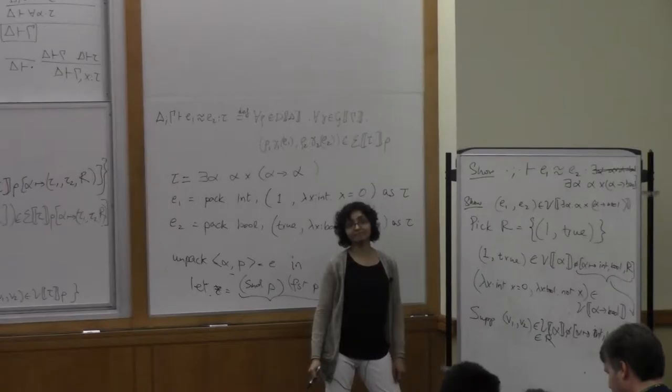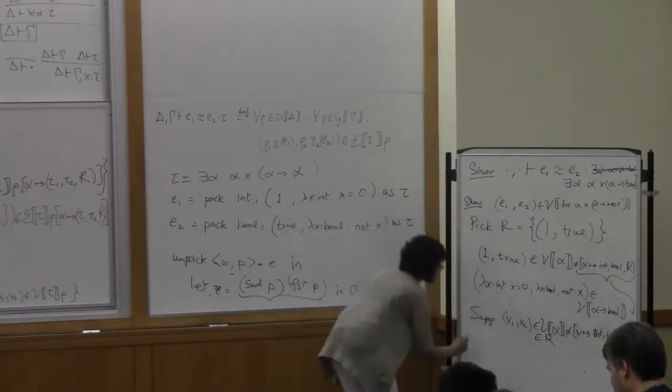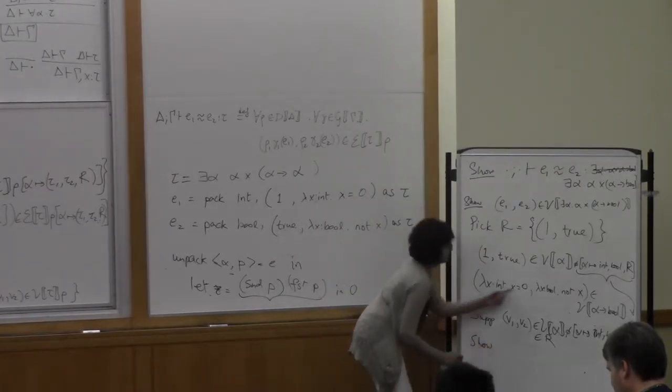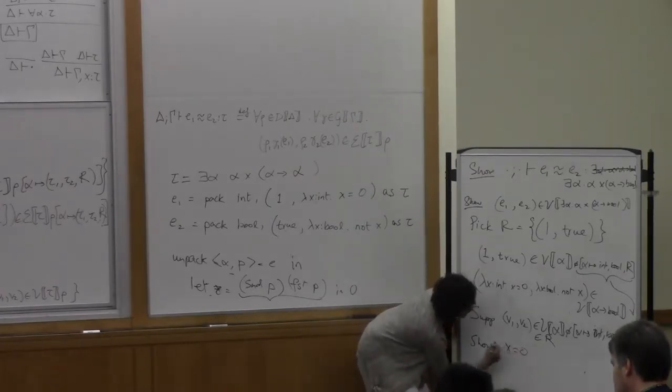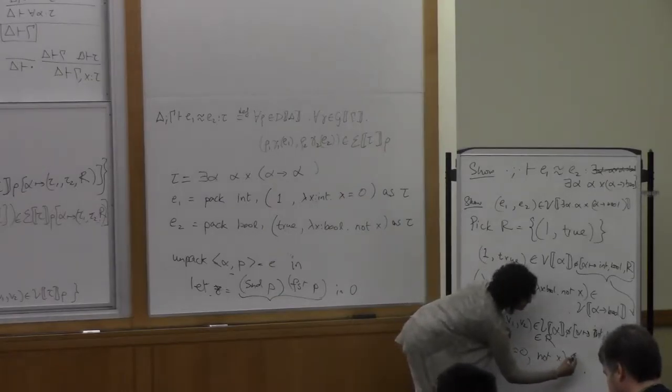Therefore, V1 is? V1. 1. And V2 is? True. So I know this now. And knowing this, I have to show that the bodies of the lambda, in other words, x equals 0, is related to not x at the type bool.